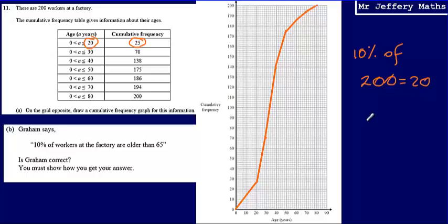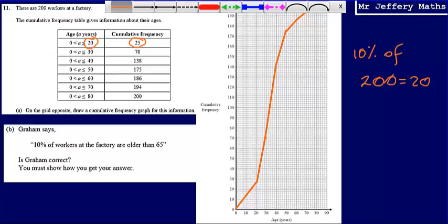So what we would be expecting is that if 10% of the workers at the factory are older than 65, that if we were to go up from 65 and go across, we would come out at about 180. Because that would indicate that at 65, there were 20 people who are older than 65. So let's do that now.